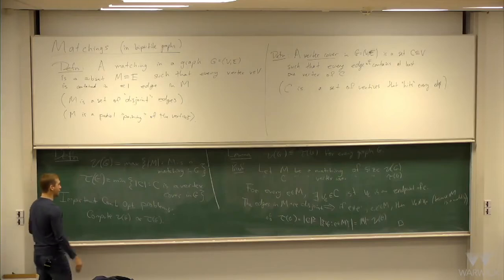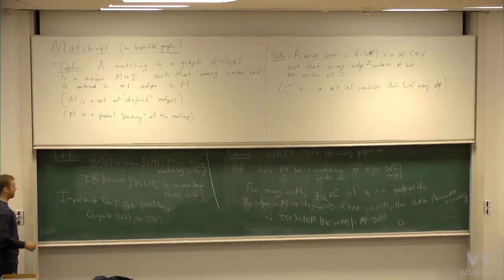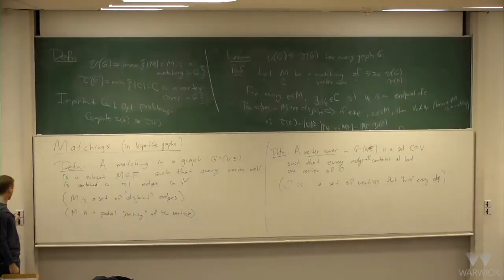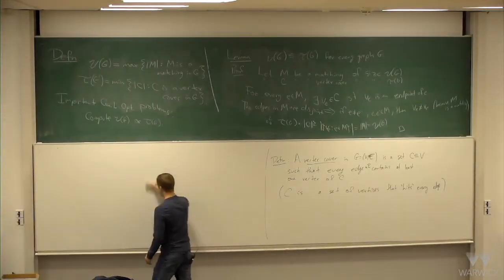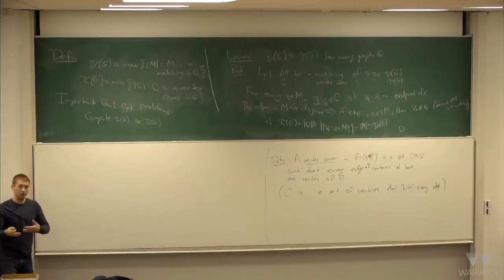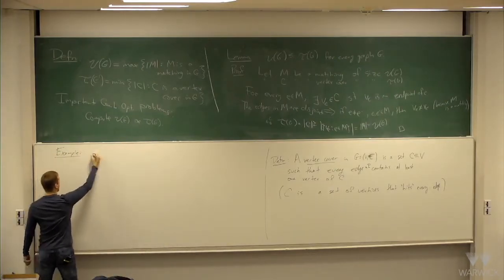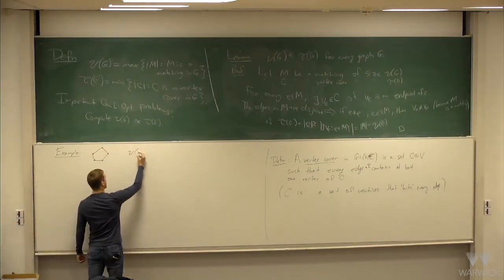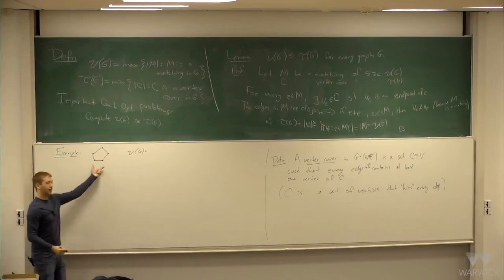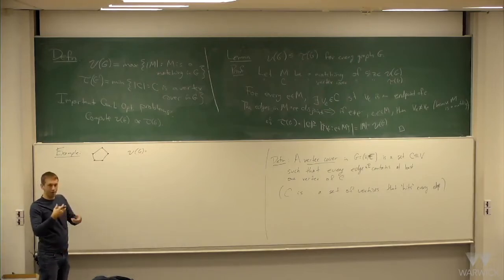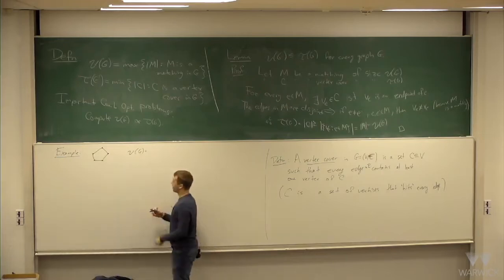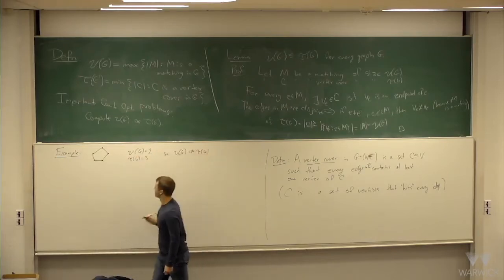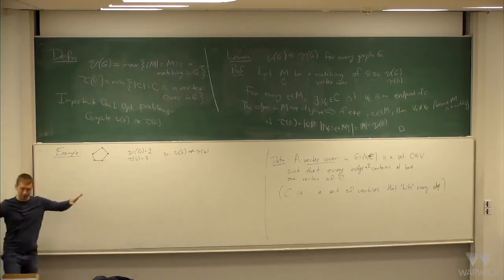Generally you have this inequality: nu is at most tau. But generally these things can be quite far apart. One simple example: take G to be a cycle of length 5. The biggest matching you can take has size 2, because if you take three edges, two of them will always have an endpoint in common. Whereas tau of G is 3. So they're not equal — this shows the inequality holds but it's not always equality.